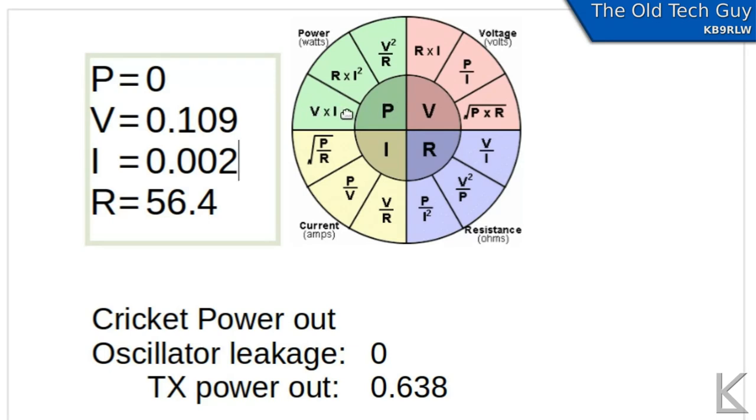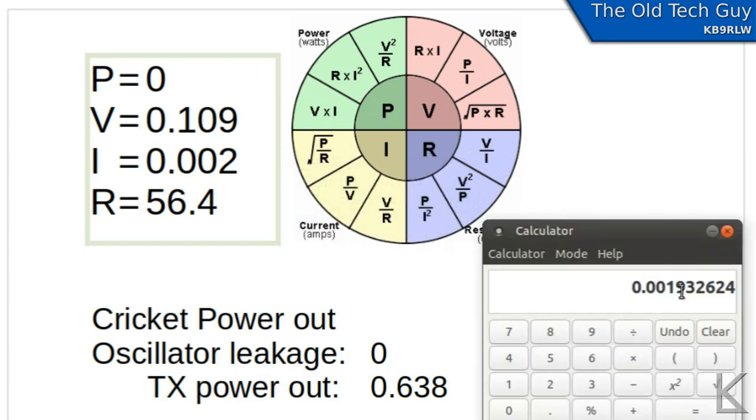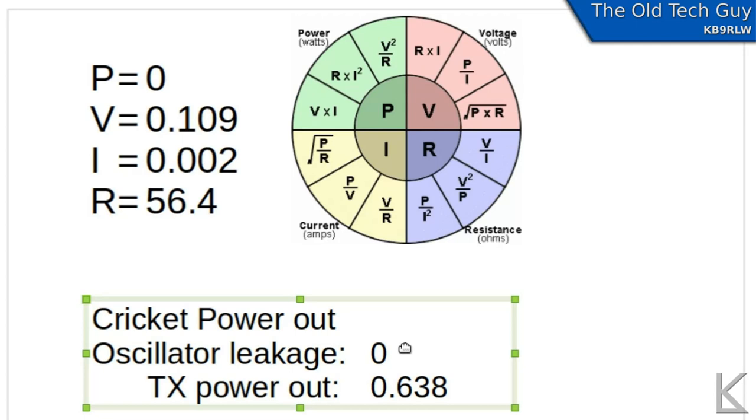Well now that I've got current I can calculate power using this formula. V times I. Voltage times current. So back to the calculator. We'll take our current value times 0.109 and we get 0.2 milliwatts of oscillator leakage. 0.0002. So there we go. That is our power the amount of power that's leaking out.